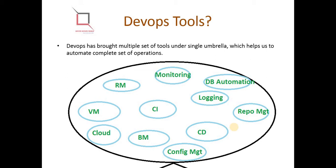What tools are required to automate these operations? DevOps has brought multiple sets of tools under a single umbrella which helps us automate our complete set of operations. DevOps is not just a single tool or a small collection of tools — it's a collection of multiple tools and multiple subsets of processes. Now let's move on and understand each subset.